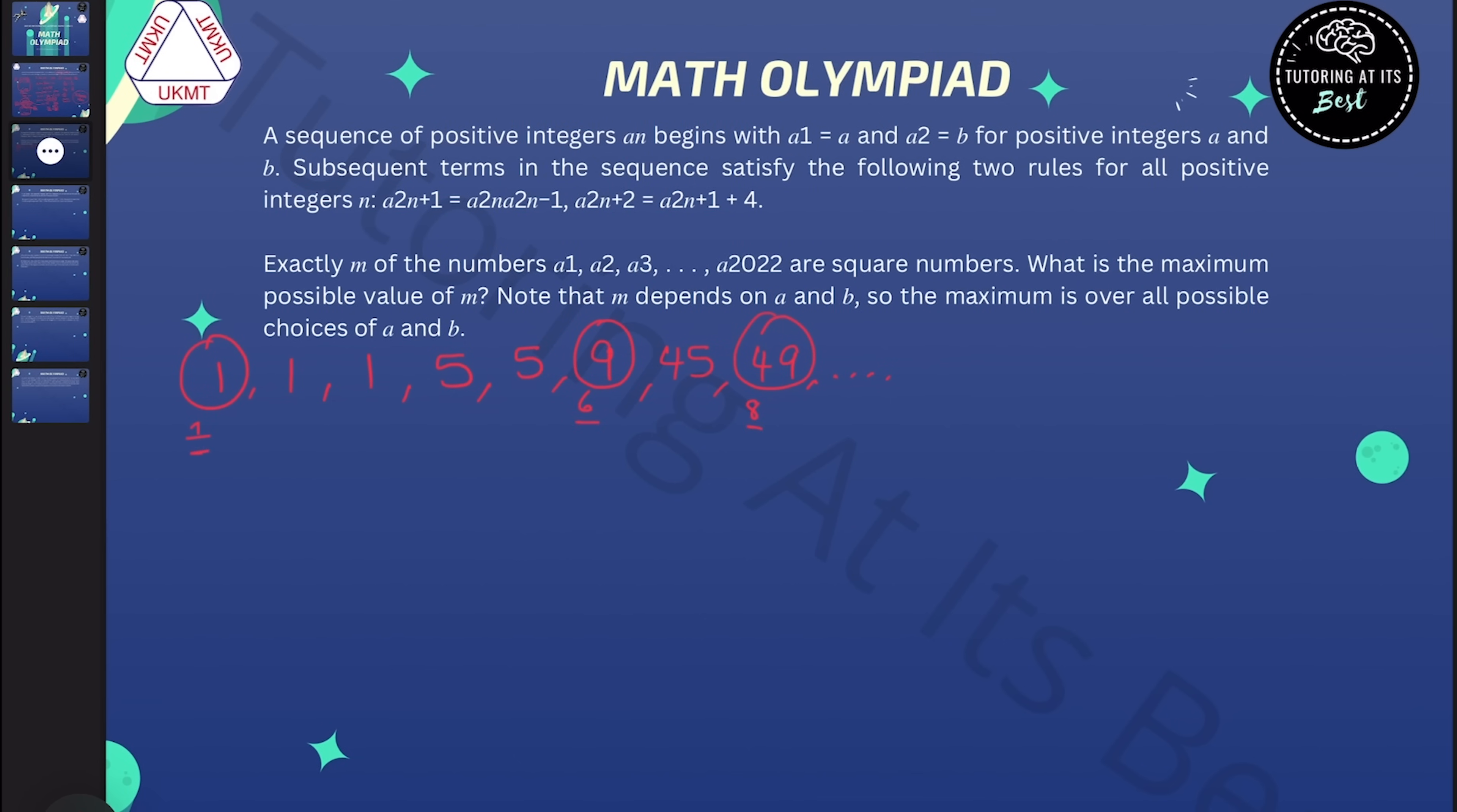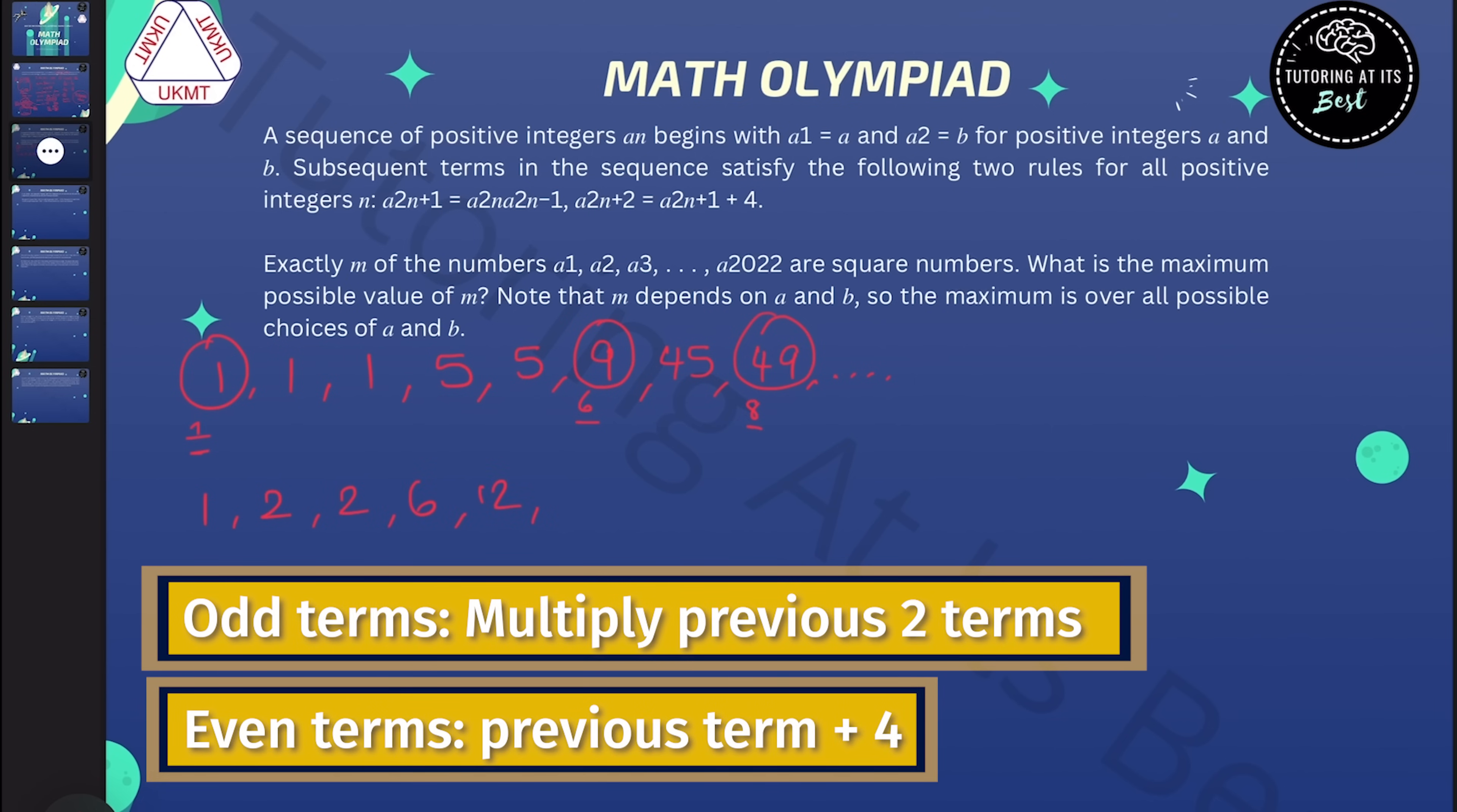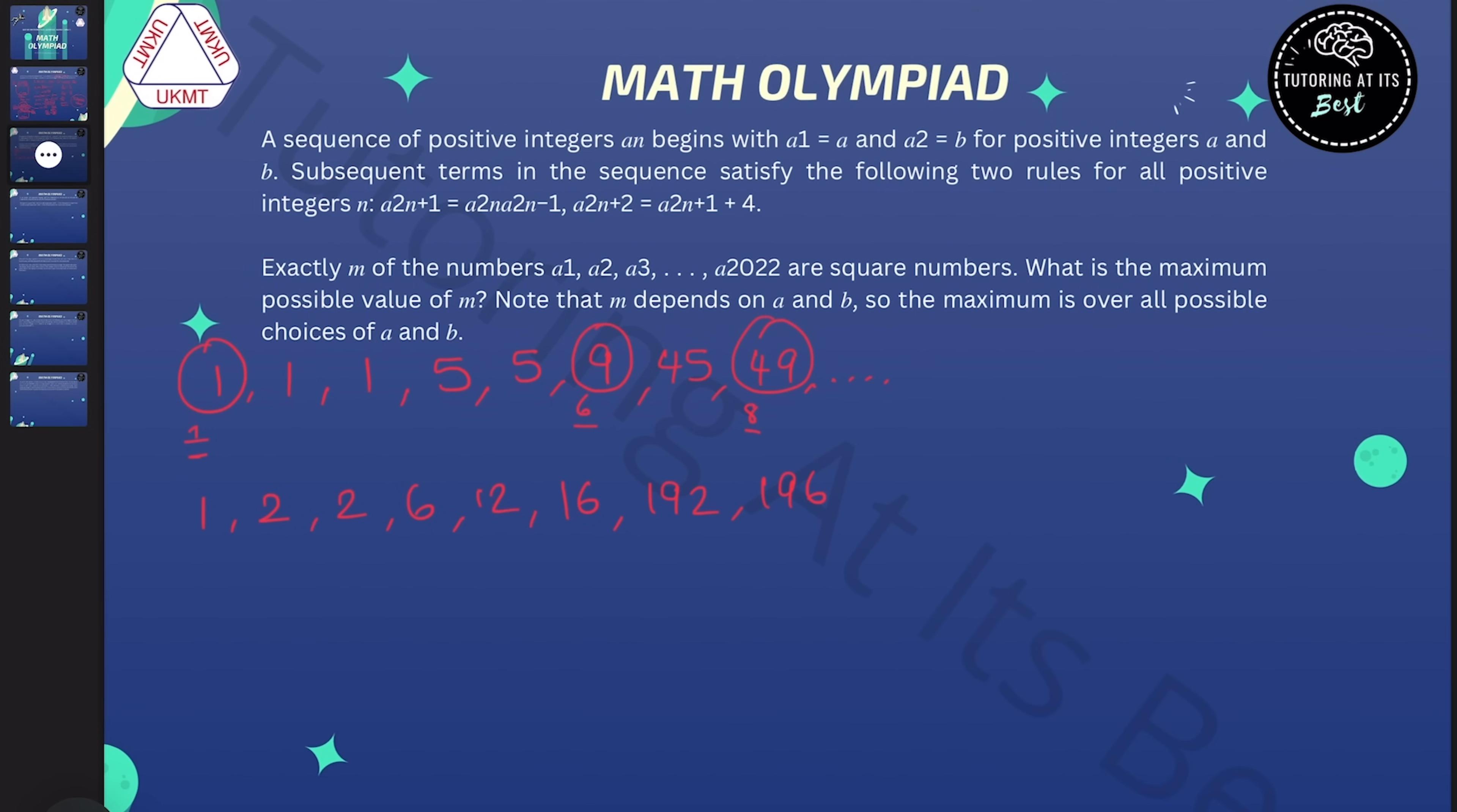And now I'm going to calculate another example with a different a and b and see what happens. I still want to keep them small, so now I'll start with 1 and 2. So now I get that 1 times 2 is 2, 2 plus 4 is 6, 2 times 6 is 12, 12 plus 4 is 16, and 12 times 16 is 192, and 192 plus 4 is 196. And I really don't want to multiply 192 and 196, so I'll stop for now.